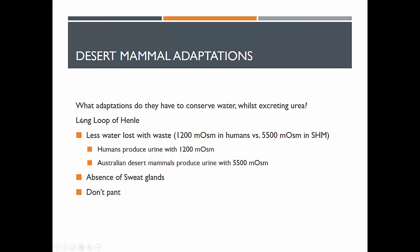Desert mammals have adaptations that allow them to conserve water whilst excreting urea. The first is a long loop of Henle, which gives them the ability to reabsorb water that was expended in creating urine in the first place — meaning less water is lost with waste. Humans produce urine with an osmolarity of 1200, while Australian desert mammals produce urine with an osmolarity of 5500 — a significantly larger amount of solutes in solution.